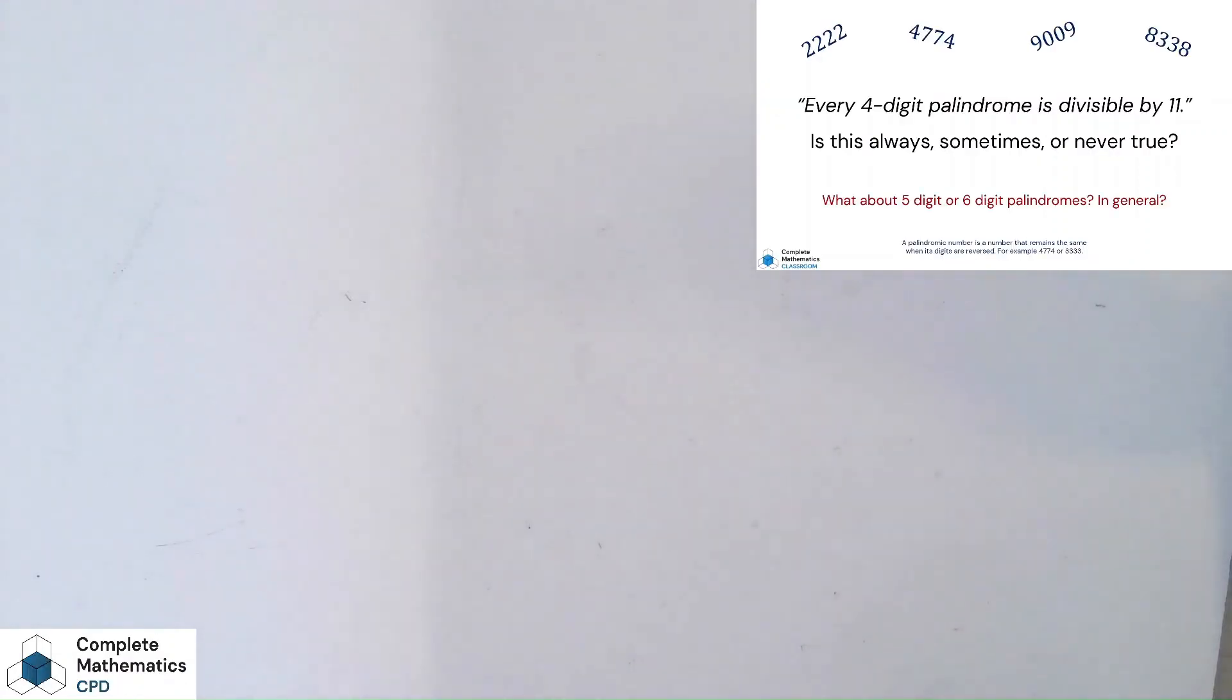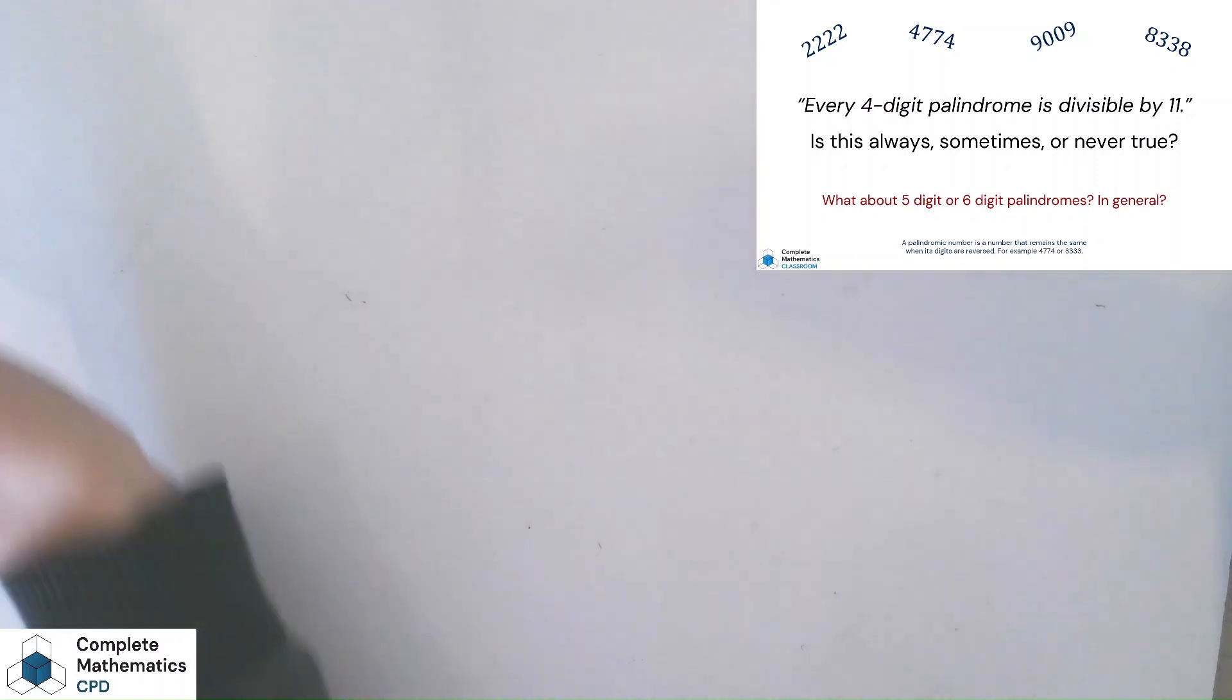It's very tempting with this task to jump straight towards an algebraic proof, but I think in doing so you miss out on an opportunity to talk about place value. In the classroom, I'll get the students to try a few four-digit palindromes and check that they all seem to be divisible by 11, nudging towards this always being true, but then we have an opportunity to work systematically.